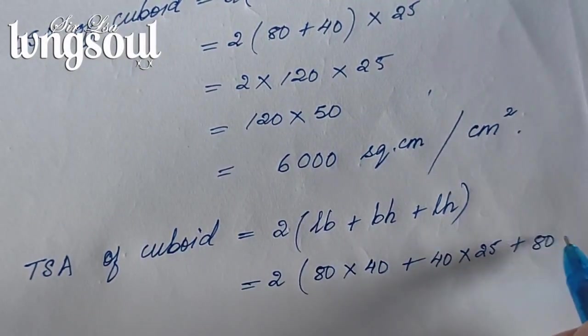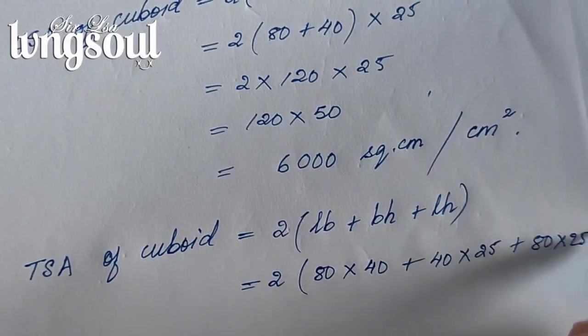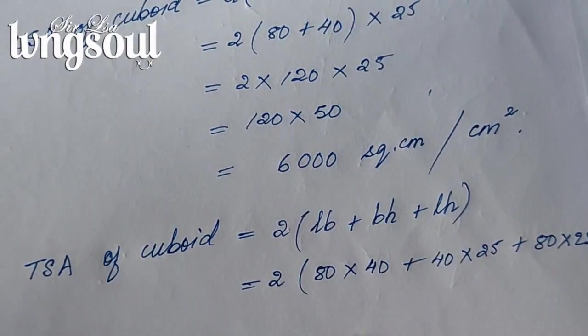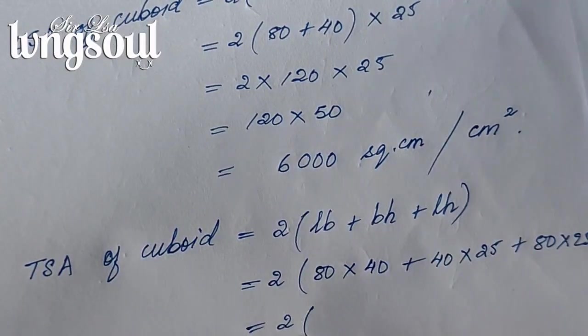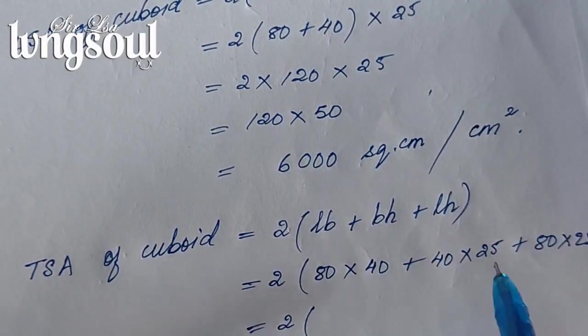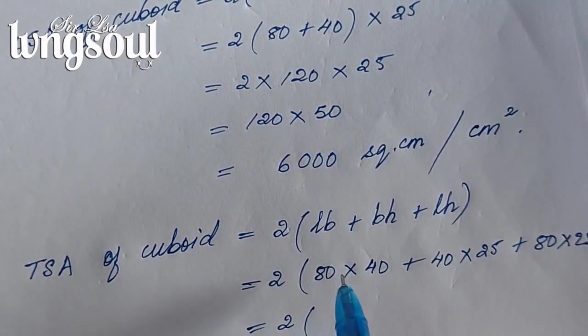So multiplying through: 2 times the sum of the products gives us the lateral surface area.